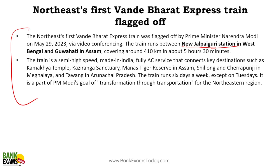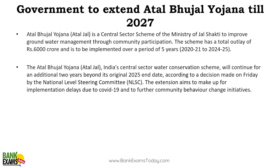The government has extended Atal Bhujal Yojana till 2027. This scheme was originally for a five-year period from 2021 to 2025 with an outlay of 6000 crore rupees. There were very good results in groundwater management improvement. However, due to COVID the government could not fully concentrate on the scheme, so it has been extended by two years — the scheme will now continue till 2027.